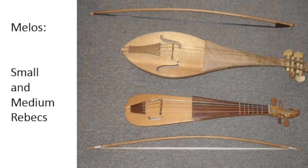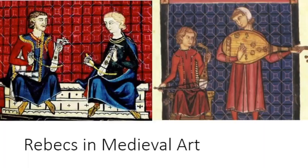Today's early music instrument profile focuses on the rebeck. Mellus' instrumentalists play three rebecks of small to medium size. The rebeck was a very popular instrument in European music from the 11th century right through the Renaissance, based on an Arabic rabab. It appeared in Europe as the Muslim influence spread.